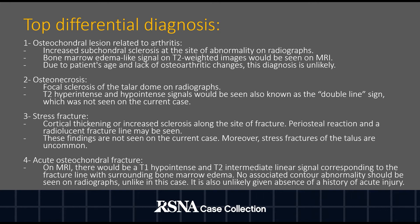For acute osteochondral fracture, on T1-weighted imaging, a hypo-intense line extending to the joint space is seen representing the subchondral fracture line with involvement of the articular cartilage. On T2-weighted imaging, intermediate signal may be seen corresponding to the fracture line with surrounding hyper-intense bone marrow edema. No associated contour abnormalities should be seen on the radiographs, unlike in this case, and this diagnosis is also unlikely given the absence of a history of acute injury.